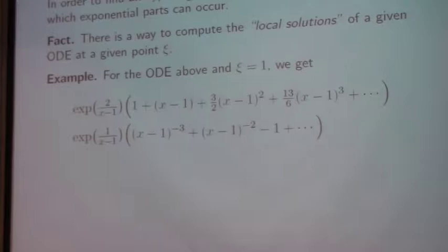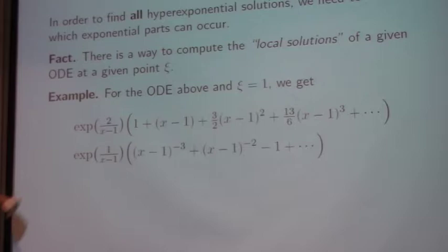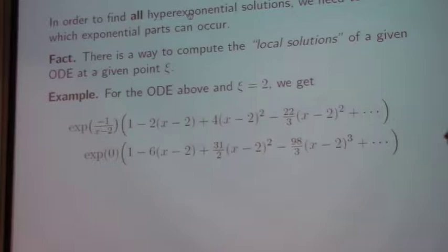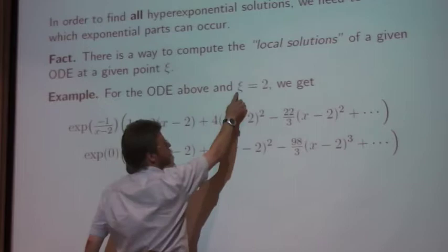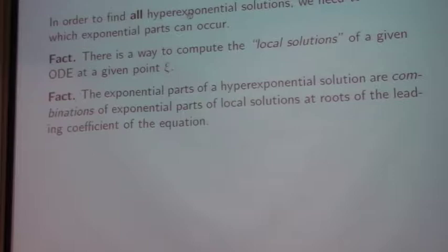Here's an example for the equations I showed on two slides ago. So it has two solutions. One looks like this, and one looks like this. And that's the first fact. Oh yeah, and there's another set of solutions that depends on what you choose as expansion point. If you expand at two, you get these two solutions, with this and this exponential part.